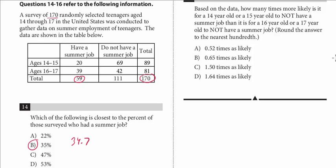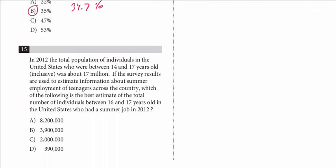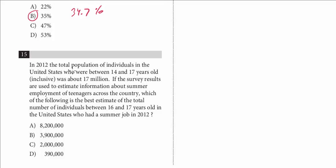The next question relating to this table is number 15. In 2012, the total population of individuals in the United States who are between 14 and 17 years old inclusive was about 17 million. If the survey results are used to estimate information about summer employment of teenagers across the country, which of the following is the best estimate of the total number of individuals between 16 and 17 years old in the United States who had a summer job in 2012. So this is a common question where we are given the total number of the whole population, 17 million. These are all of the 14 to 17 year olds.